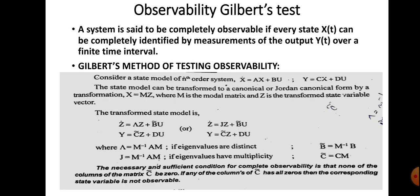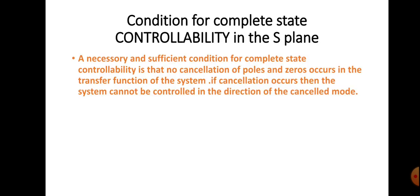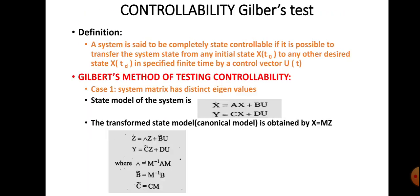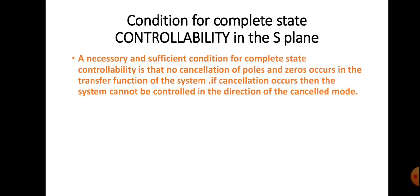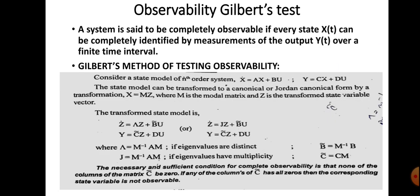In the case of controllability we analyze the B̂ matrix, where there should not be any all-zero rows. But in the case of observability we analyze the Ĉ matrix, and here the condition is that no column should be all zero. That is the key difference between the Gilbert's test conditions for controllability and observability.